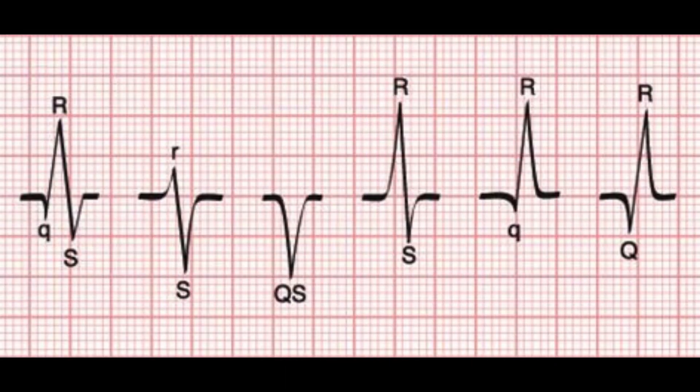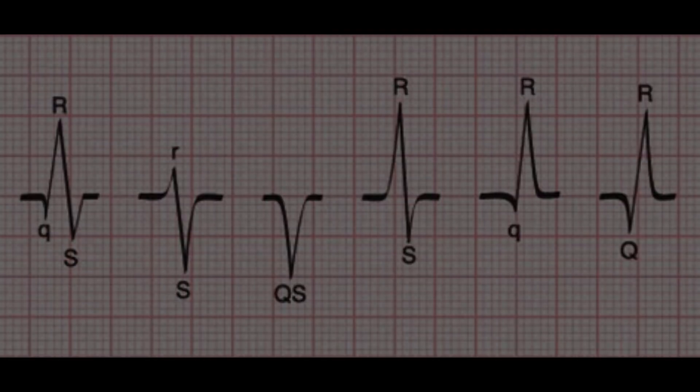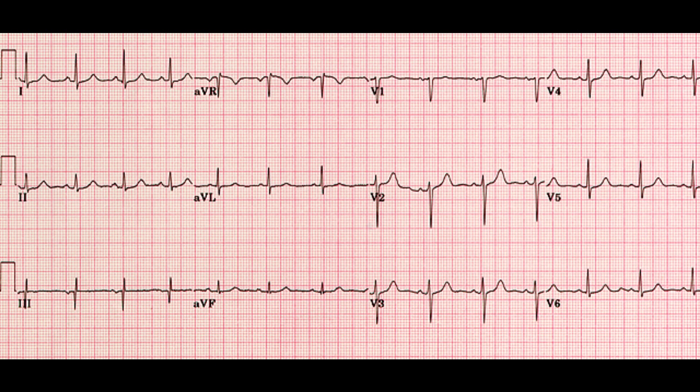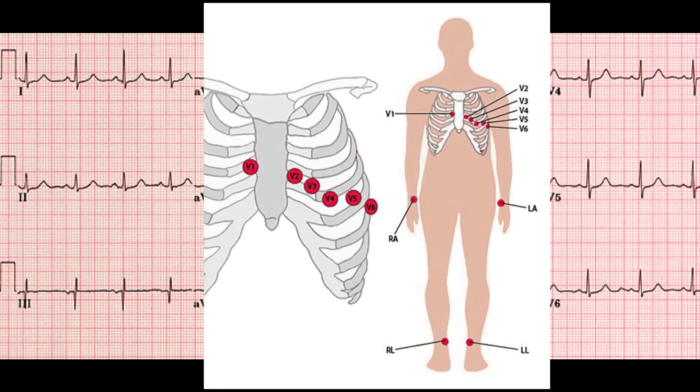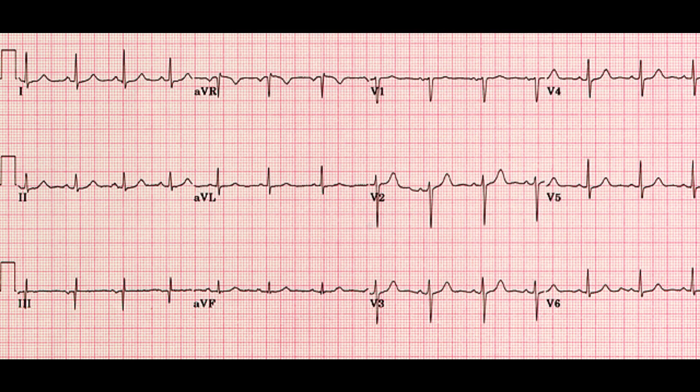Normal variations of the QRS complex include differences in amplitude, duration, and morphology that are considered to be within the normal range for a healthy heart. The morphology of the QRS complex can vary depending on the lead placement and the orientation of the heart in the chest.